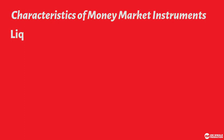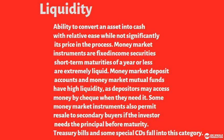Let us now look at the characteristics of money market instruments. The first one is liquidity — the ability to convert an asset into cash with relative ease while not significantly depressing its price in the process. Money market instruments are fixed income securities with short term maturities of a year or less and are extremely liquid. Money market deposit accounts and money market mutual funds have high liquidity as depositors may access money by check when they need it.